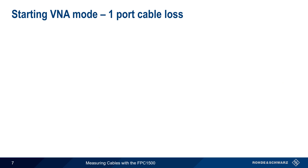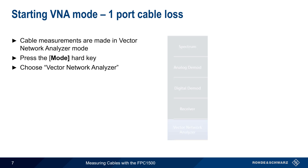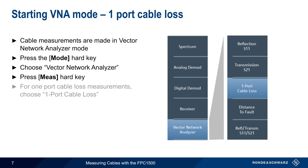Cable measurements on the FPC-1500 are made in Vector Network Analyzer mode. To enter this mode, press the Mode hard key on the front of the FPC, and then choose Vector Network Analyzer. Next, press the Measure hard key and choose One-Port Cable Loss.